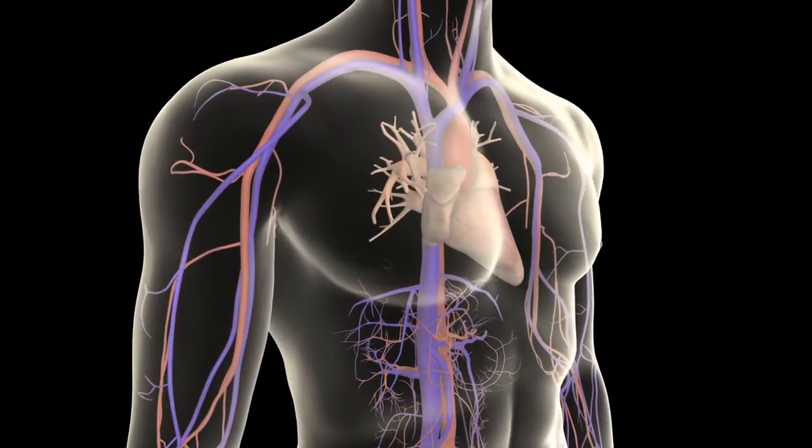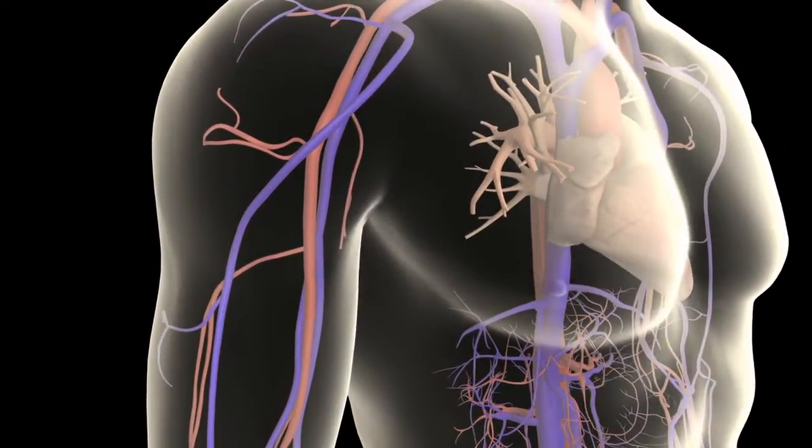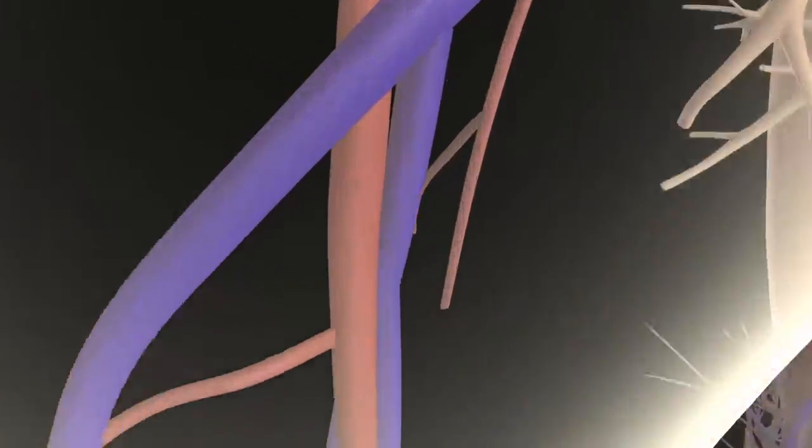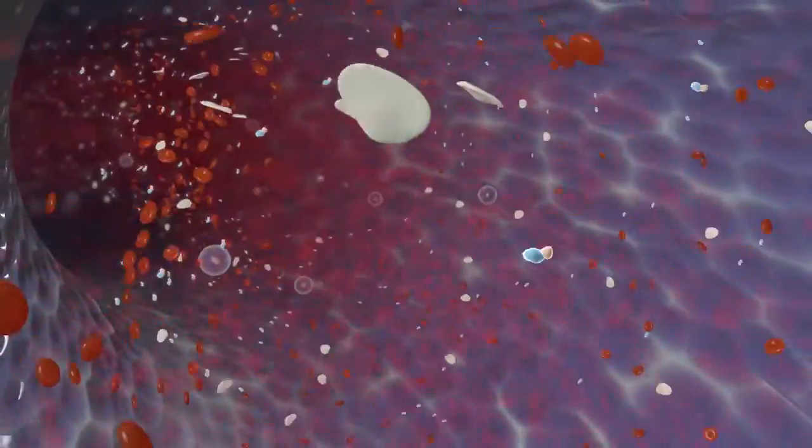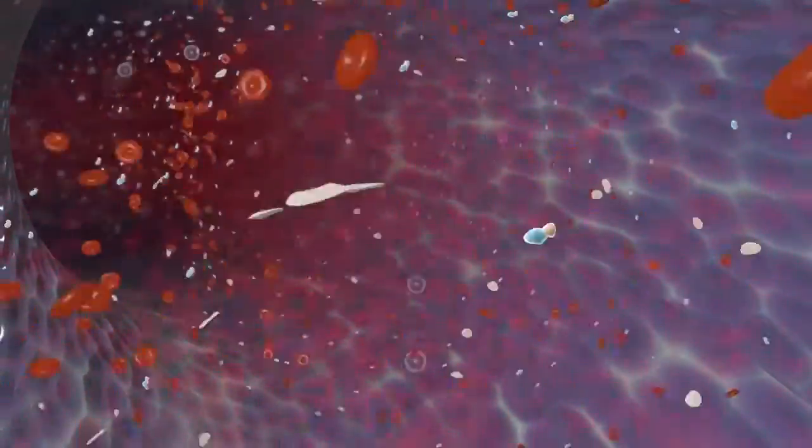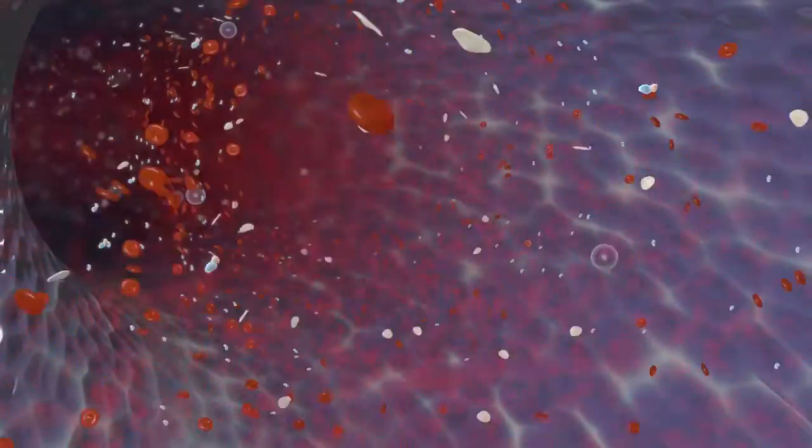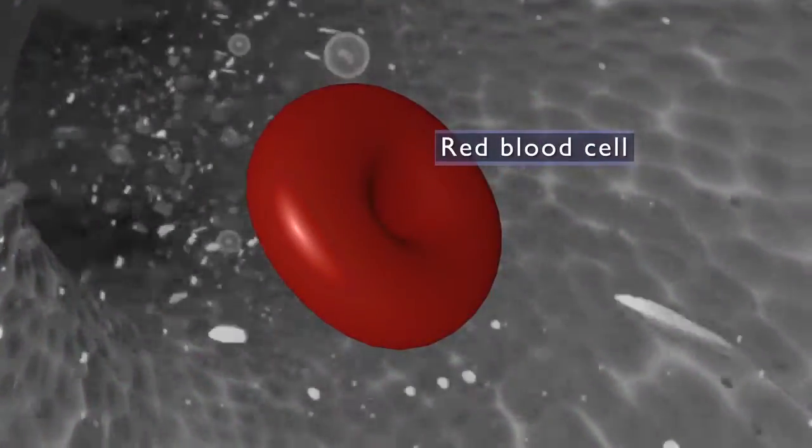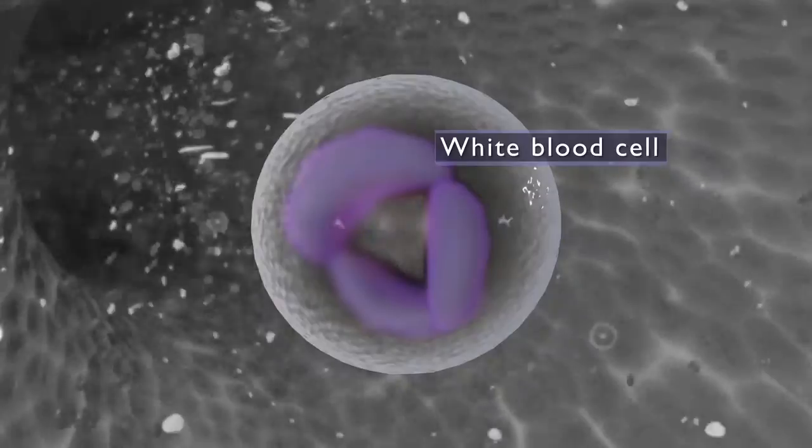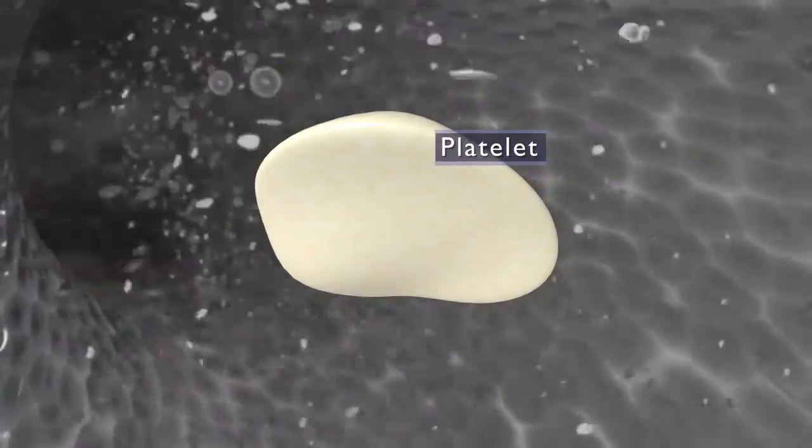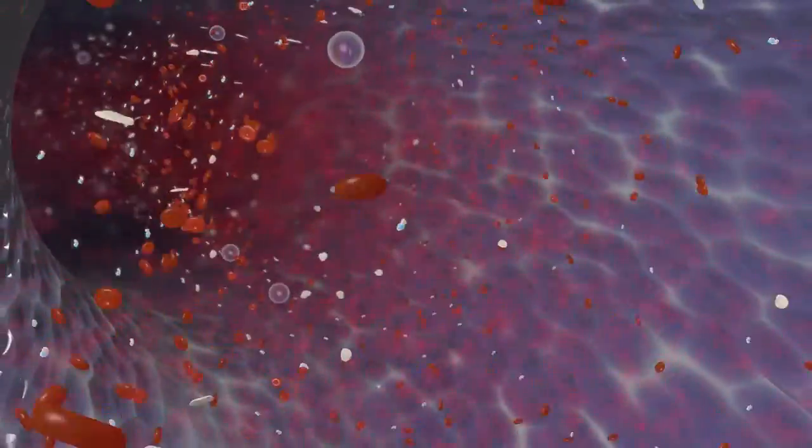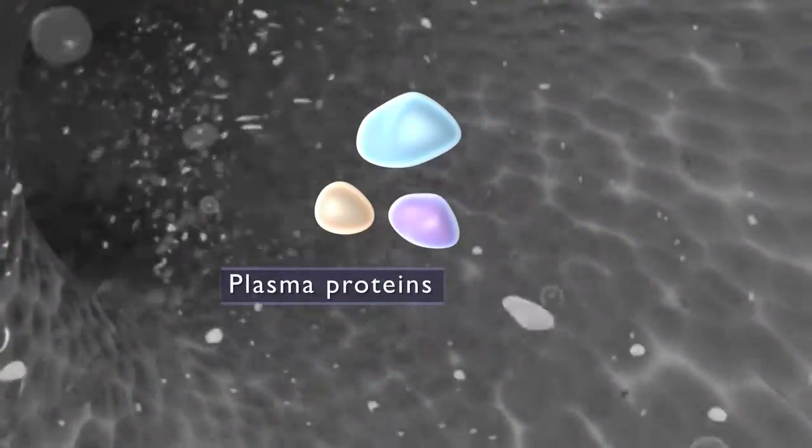The average adult contains about five liters of blood. Blood consists of living cells suspended within the liquid plasma. These cells are red blood cells, white blood cells, and platelets. Blood also contains a variety of proteins such as albumin, globulins, and fibrinogen, which are important for hemostasis and clotting.